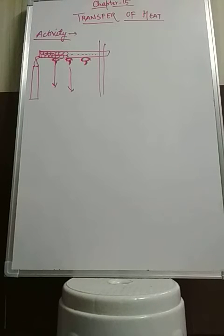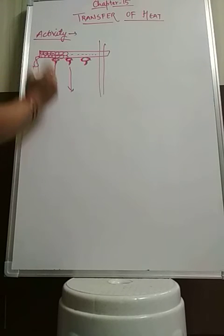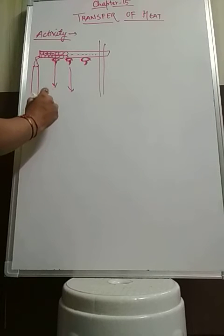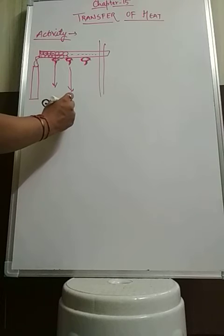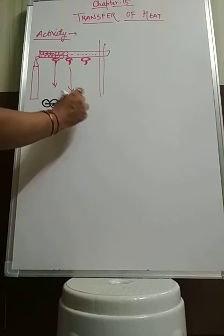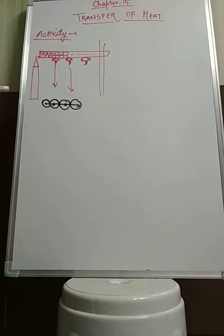There are some characteristics of conduction. The first characteristic is that conduction is a point-to-point process of transfer of heat. Point-to-point means from one molecule to another — this is one point, that is another point. So in the conduction method, point-to-point transfer of heat takes place.